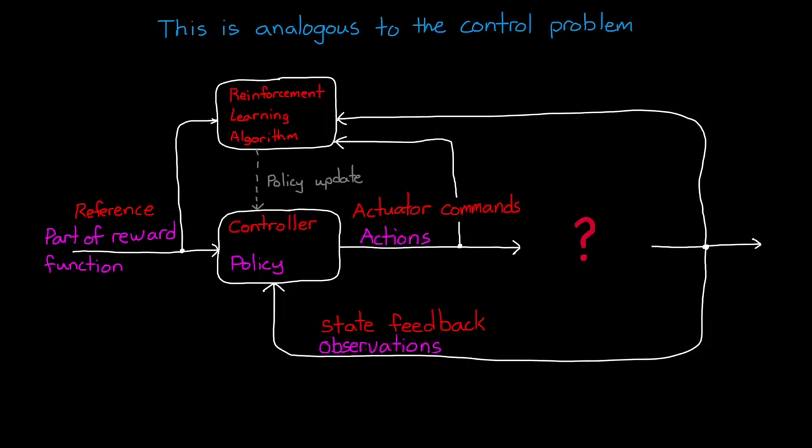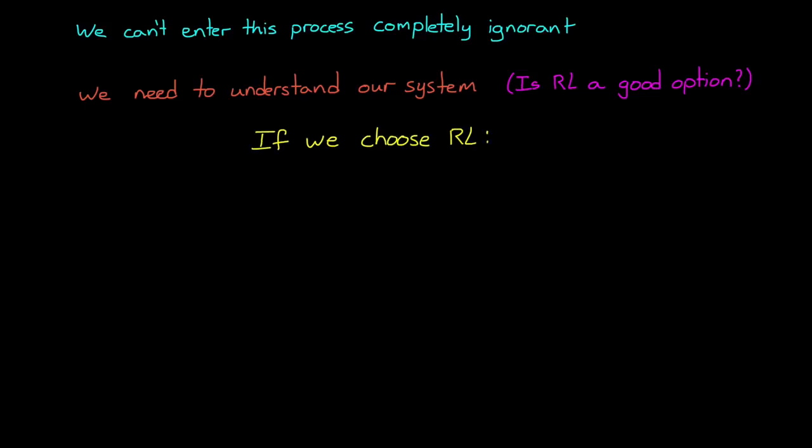Now even with the learning algorithm doing most of the work for us, we can't enter this process completely ignorant. We have to know several things before we start. The first is that we need to understand our system that we're trying to control, and determine whether it's better to solve the problem with traditional control techniques, or with reinforcement learning.